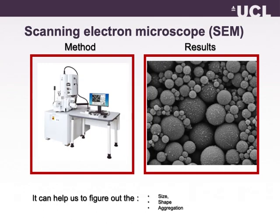Scanning electron microscopy, SEM, is also used for size, shape, and aggregation analysis of your nanoparticles. As you can see from the results, SEM shows a more 3D view of your particles compared to TEM.